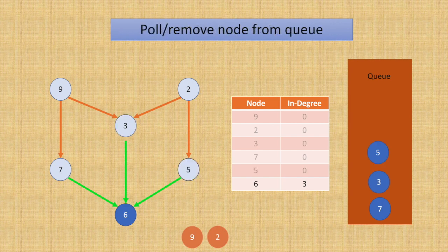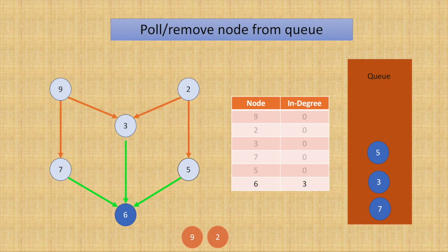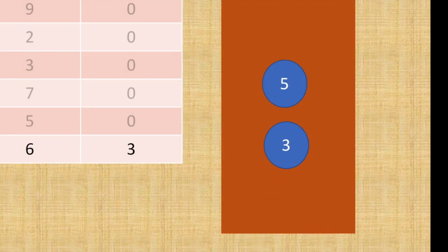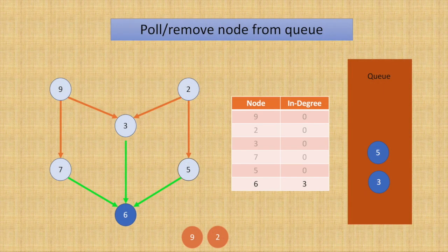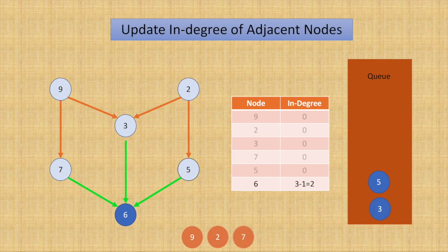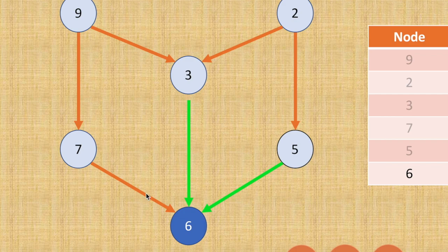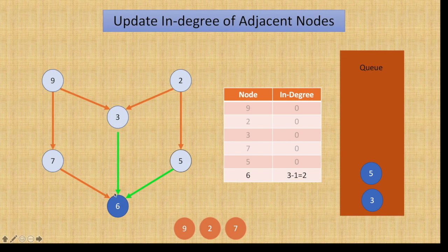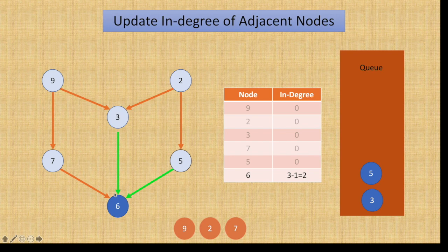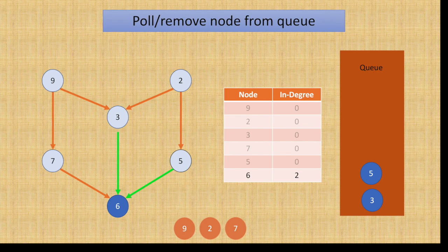So now again we'll start polling nodes from the queue. This time we poll node 7, and we'll have to update the in-degree for node 6 now. We mark our edge as orange so that we know that this has been updated. So the new in-degree for node 6 is 2. And we'll again poll the next element since node 7 doesn't have any other connections. So we can just simply go ahead and poll the next node from the queue.